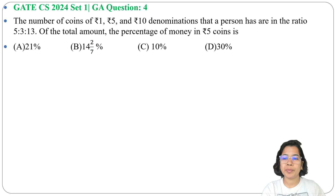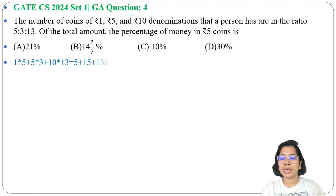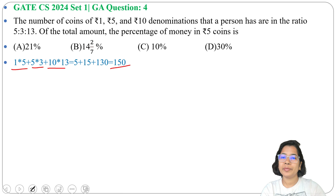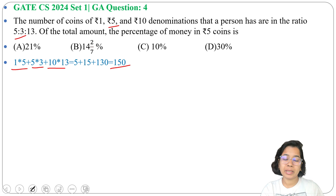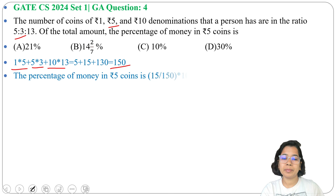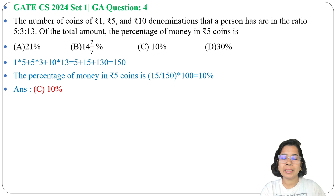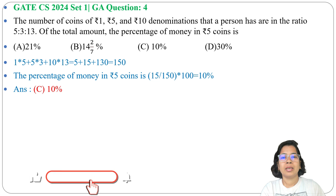Let we have 5 one-rupee coins, 3 five-rupee coins and 13 ten-rupee coins. So total amount will be 1×5 + 5×3 + 10×13 = 150. Now from that 150 Rupees, 5 Rupee coins make 5×3 = 15. It is asking how much percentage is 15 of total 150. So 15 divided by 150 into 100 is 10%. From the total money, 10% is from 5 Rupee coins.